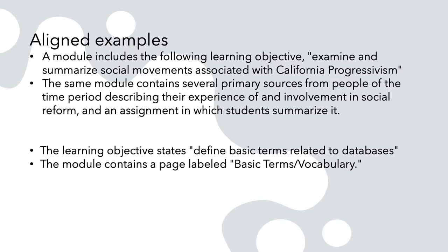Here are aligned examples. So let's say a module includes the following learning objective: examine and summarize social movements associated with California progressivism. Your reviewers will be looking to make sure the same module contains several primary sources from people of the time period describing their experience and involvement in social reform, and assignments in which students summarize it, or something like that.